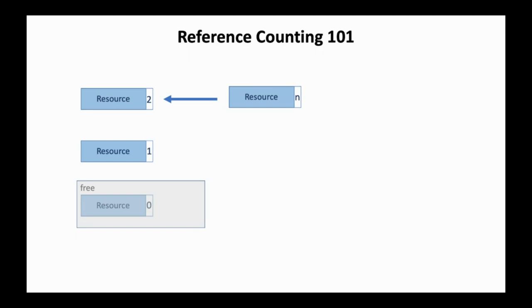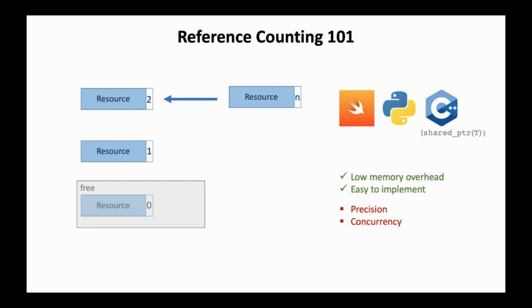Reference counting is a popular technique because of its low memory overhead, and it is easy to implement. It has been used in languages like Swift, Python, and shared pointers in C++. However, there are at least three known problems that make reference counting operations expensive in practice. That is, common reference counting systems are not precise and hold onto objects too long. Also, when multiple threads share a data structure, reference count operations need to be atomic, which is very expensive. Furthermore, if object references form a cycle, the runtime needs to handle them separately.